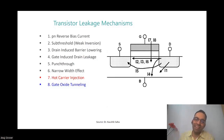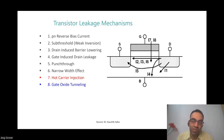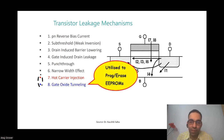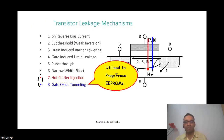This slide shows different kinds of leakages inside a MOSFET — different currents flowing and leaking through a transistor. Things which were problems earlier can actually be used to your benefit. Hot carrier injection, for example, is a problem in a regular CMOS process, but for flash you actually use hot carrier injection to do something useful. Gate oxide tunneling is used to program and erase EPROMs — so things which were problematic are now used as an advantage to program or erase the flash cell.